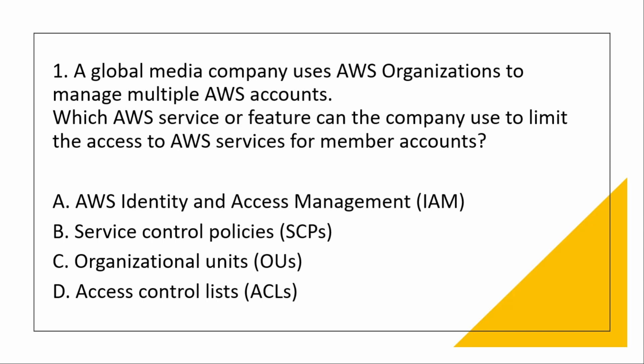Organizational units enable you to organize accounts into a hierarchy, making it easier to apply management controls — similar to how team leads in an office share the same company rules. Access Control Lists are used to manage access to buckets and objects. The correct answer is Service Control Policies, which allows us to limit access to AWS services for member accounts.